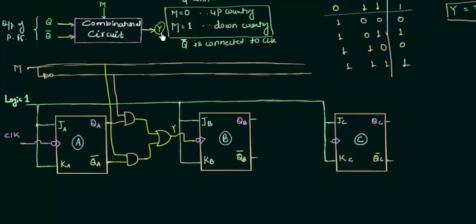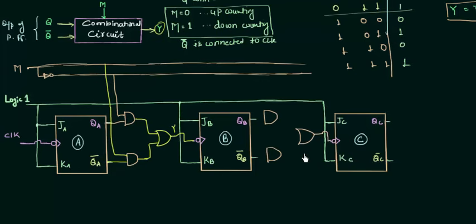The same combinational logic is implemented between the next pair of flip-flops as well. This is the logic that decides whether we do up counting or down counting. This is a 3-bit up-down asynchronous counter because I am using 3 flip-flops. If you want a 4-bit up-down asynchronous counter, you use 4 flip-flops in the same way — you simply add another flip-flop and implement this combinational logic once more.